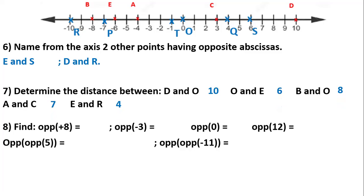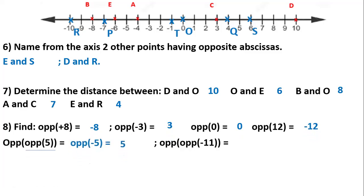Now we should find the opposite of given numbers. To find the opposite of any abscissa, it has the same number but a different sign. The opposite of plus 8 is minus 8. The opposite of minus 3 is plus 3. The opposite of zero is zero since zero has no sign. The opposite of 12 is negative 12. The opposite of the opposite of 5: the opposite of 5 is minus 5, so the opposite of minus 5 is 5. The opposite of the opposite of minus 11: the opposite of minus 11 is 11.